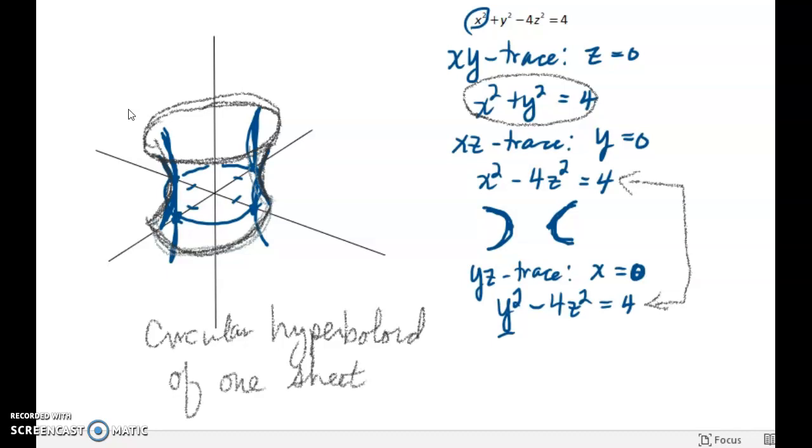There is another type of hyperboloid. It's a hyperboloid of two sheets, which looks very different actually. It looks like two bowls that face away from each other.